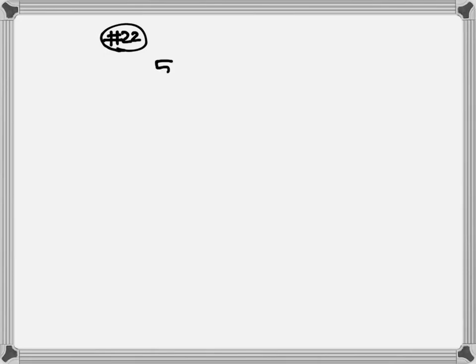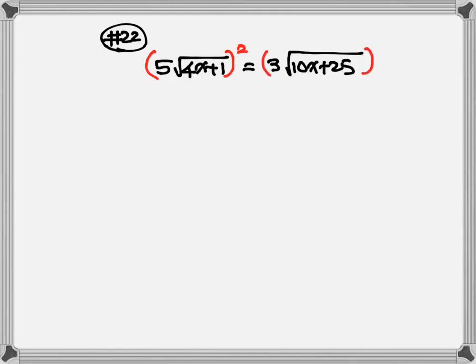Let's look at number 22. Number 22: we have 5 times square root of 4x plus 1 is equal to 3 times square root of 10x plus 25. There's a square root with one expression on each side, so we're going to square both sides. The 5 is outside the square root, so 5 squared gives you 25. The number inside the square root is written down: 4x plus 1.